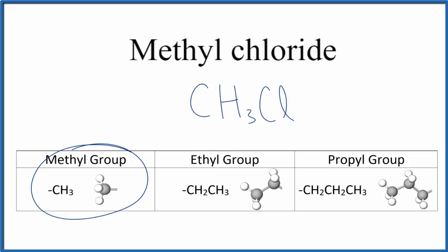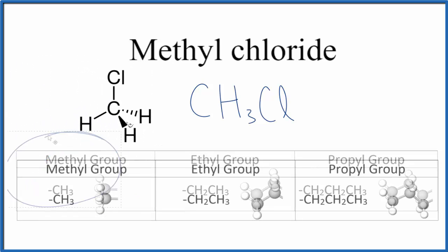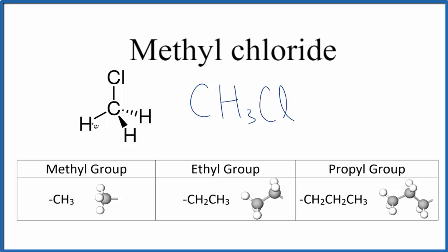If we wanted to look at this in terms of a structural formula, carbon bonds to four things. We have the three hydrogens and the one chlorine. So here's our carbon with the three hydrogens around it and the one chlorine. You can see it's a tetrahedral molecular geometry.